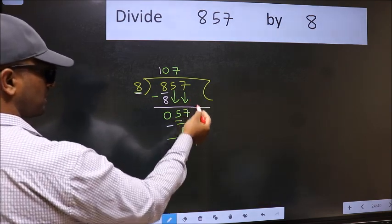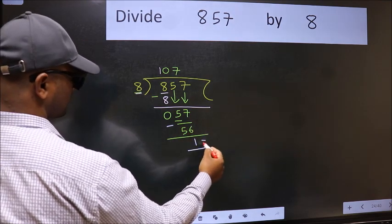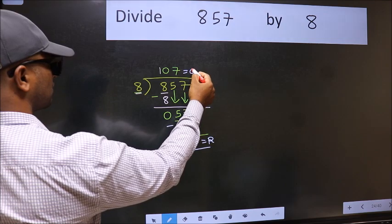No more numbers to bring down. So we stop here. This is our remainder and this is our quotient.